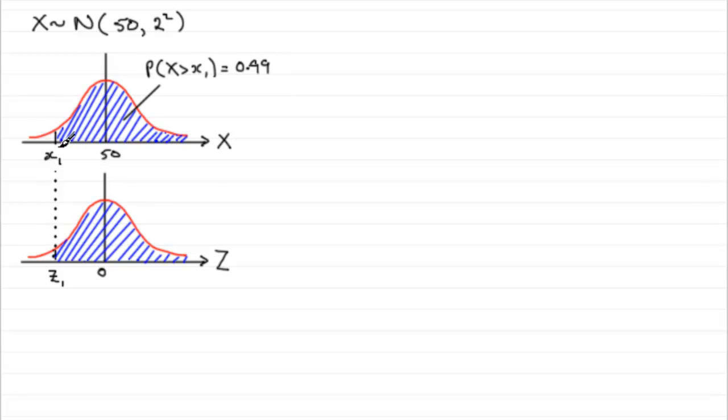Now, to find out what that weight is, we've got to get the equivalent z1 value. And we know that z1 is given by the observed value, in this case x1, minus the mean mu, 50, all over the standard deviation sigma, which is 2. Now we can only get x1 if we know z1.